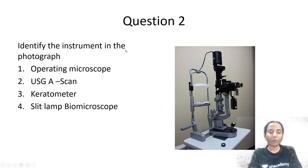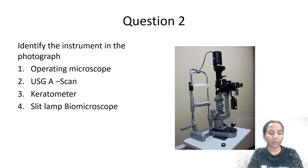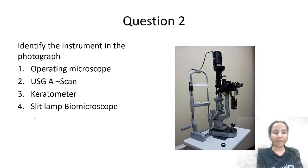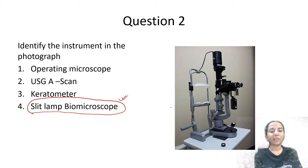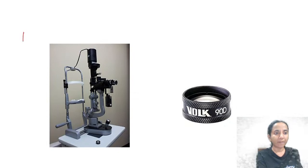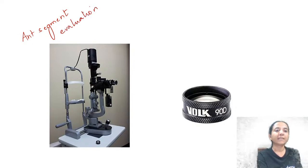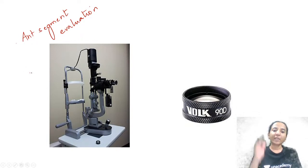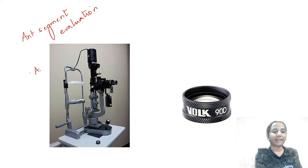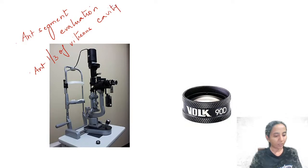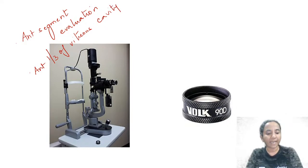Next question: identify the instrument in this photograph. The options are operating microscope, USG-A scan, keratometer, or slit lamp biomicroscope. This is a slit lamp biomicroscope. It is used for evaluation of the anterior segment — meaning all structures in front of the crystalline lens. You can also see up to the anterior one-third of the vitreous cavity with this slit lamp.